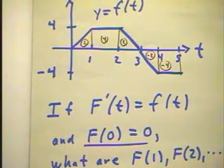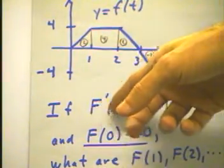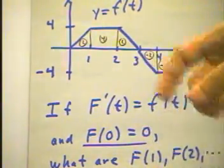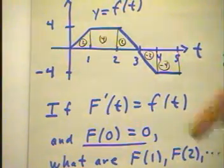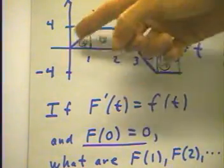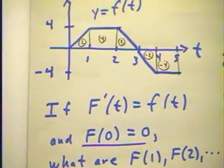Now the question is this: if we have a function big F of t whose derivative is equal to f of t, that is, big F is an antiderivative of the little f function that we have here,